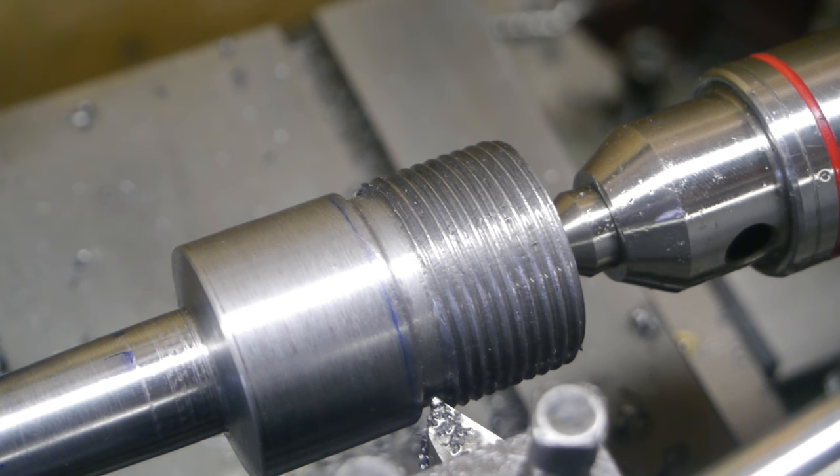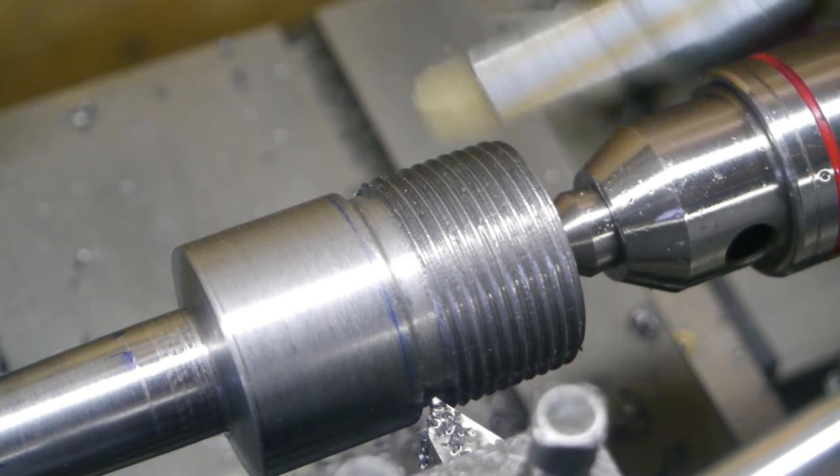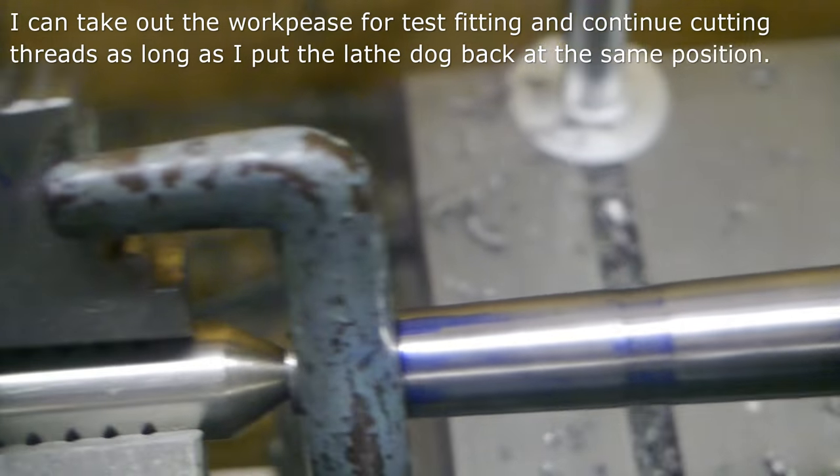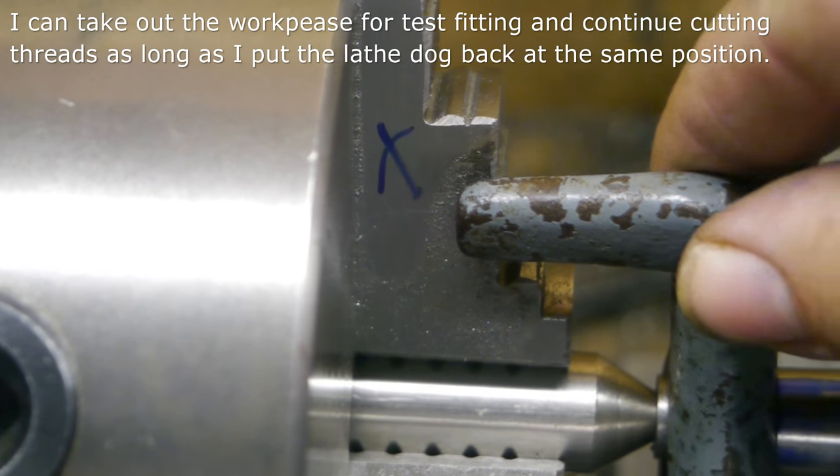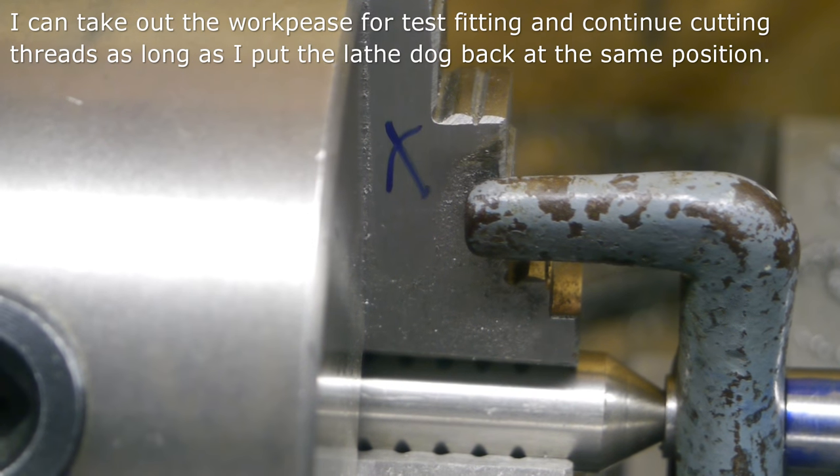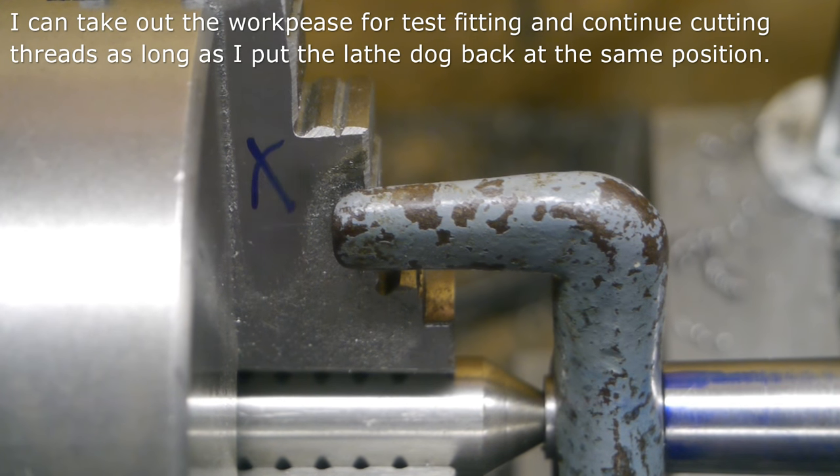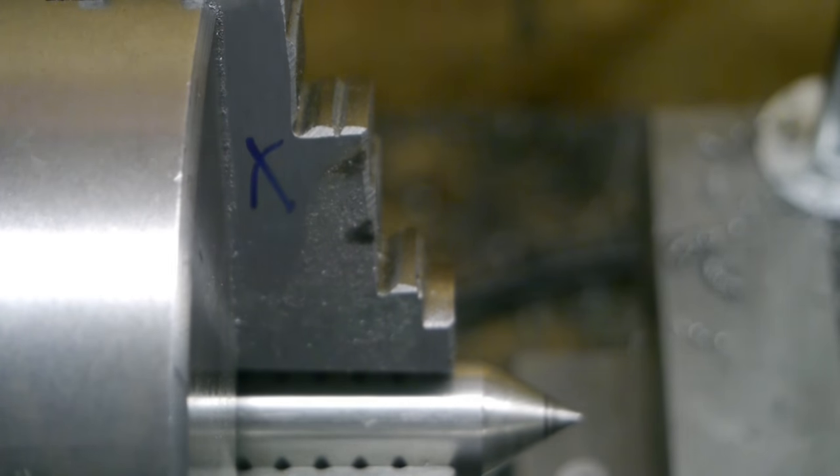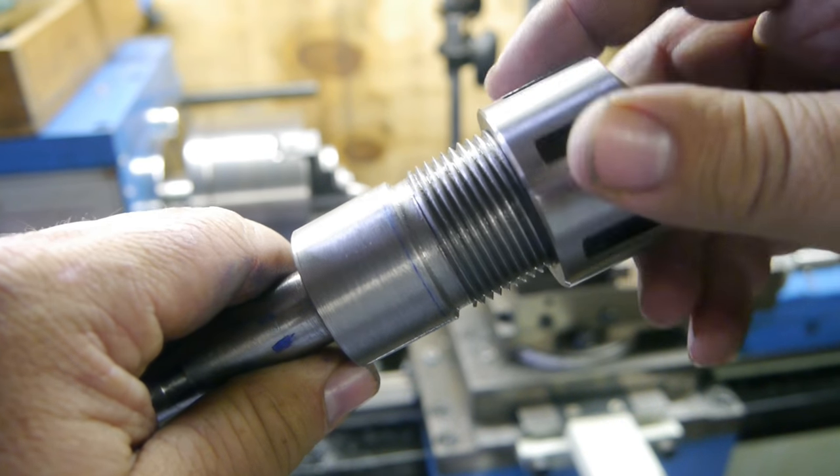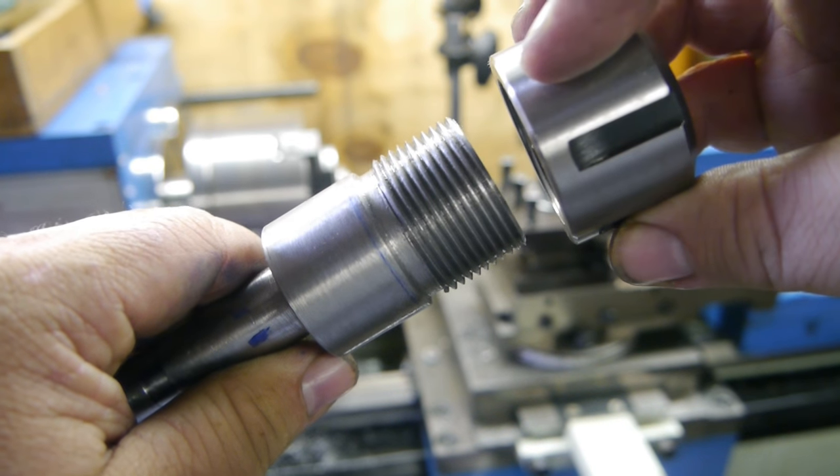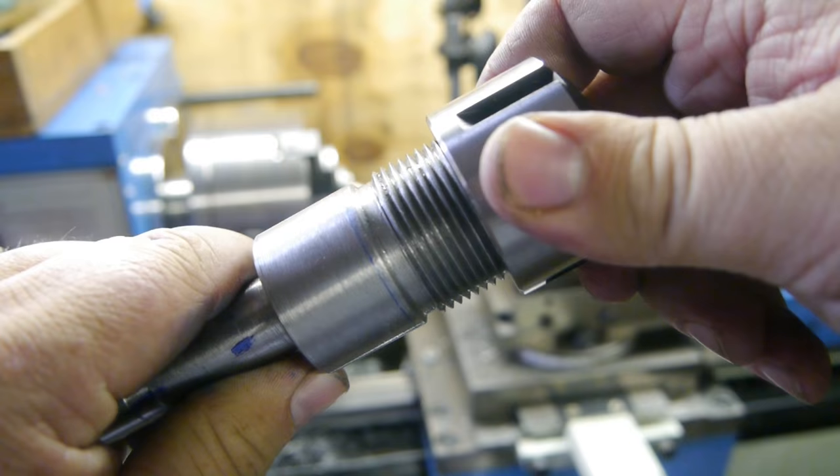I'm getting close but the OD is a bit too big so I will need to use a file to cut it down a bit. I marked the jaw and as long as I go back to that jaw where the lathe dog engages the jaw, it should be fine.